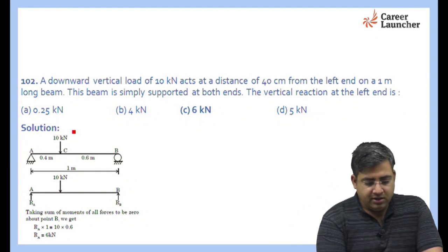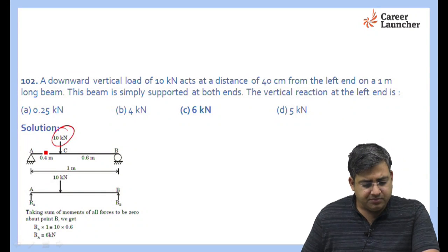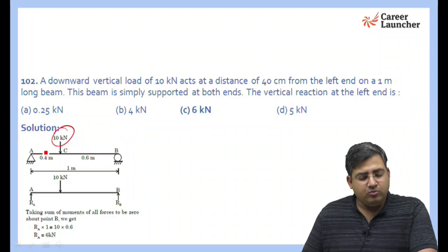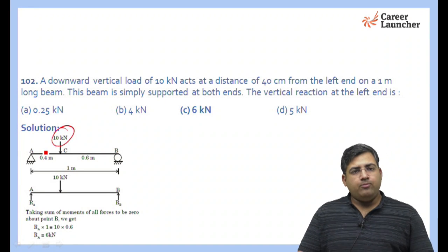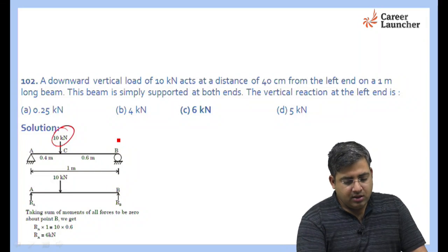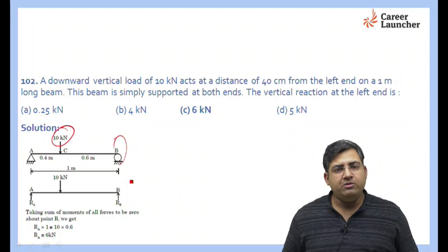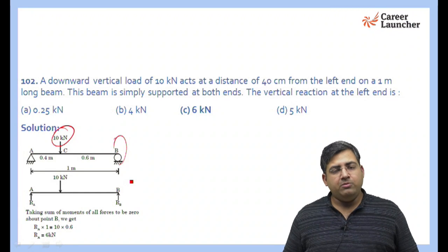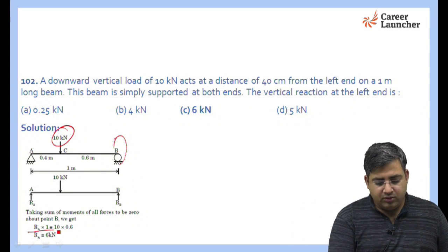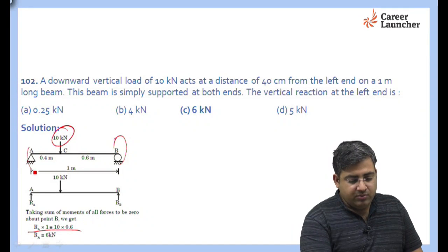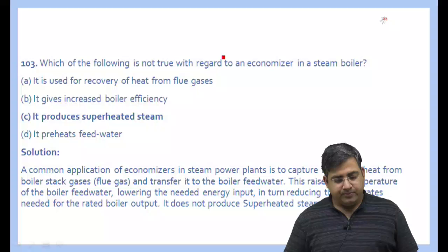The next question: a downward vertical load of 10 kilonewton is acting at point C. The gap between point A and point C is 0.4 meters, and between point C and point B is 0.6 meters. When you apply the moment equation about point B and set all moments to zero, you get RA × 1 = 10 × 0.6, so the reaction at point A equals 6 kilonewton.